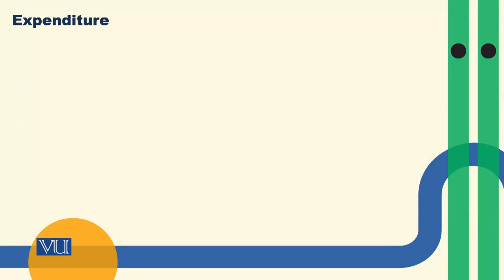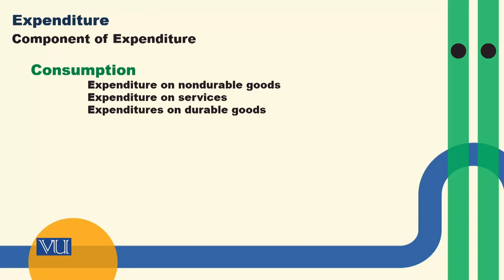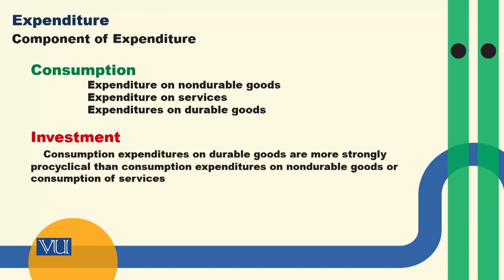The second macroeconomic variable is expenditure. Expenditures include consumption expenditure, investment expenditure, and government spending, but we will focus on consumption and investment. Consumption has further components: expenditure on durable goods, on services, and on non-durable goods. Empirically, consumption expenditure on durable goods is more strongly pro-cyclical than consumption expenditure on non-durable goods or services.